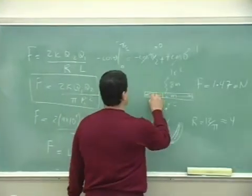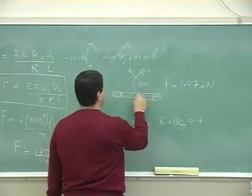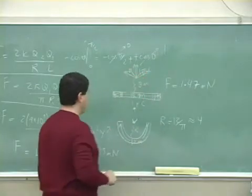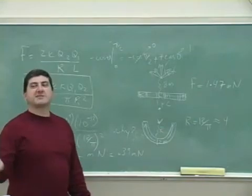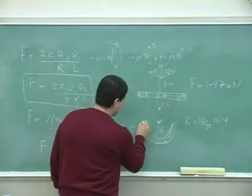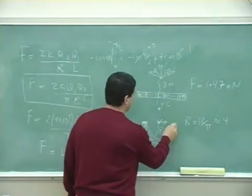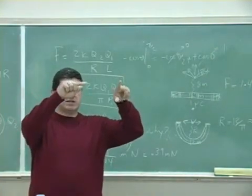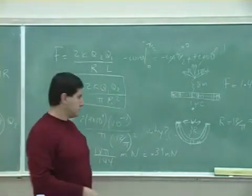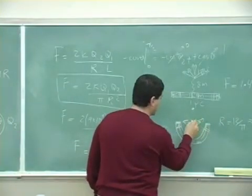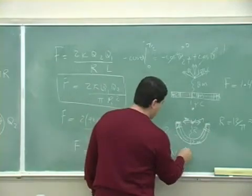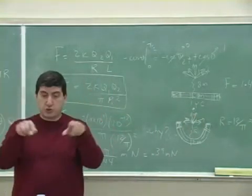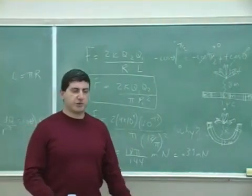Over here there were cancellations taking place — in the middle there is not as much cancellation, but towards the ends there's more cancellation. This part of the rod pushes forward, and this part pushes forward — complete cancellation. With the bent rod, for a charge in the middle, most portions of the rod apply forces that mostly cancel. The only ones that don't cancel are a small component pushing downward. So even though the charge is closer to the semicircle, because of the cancellations the net force is quite a lot less.